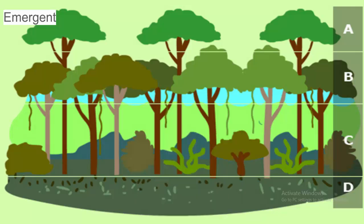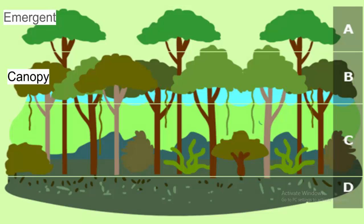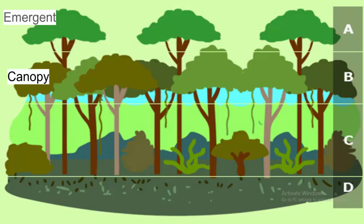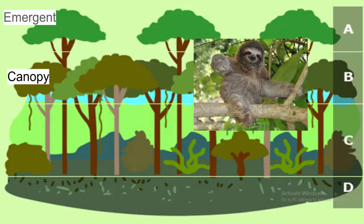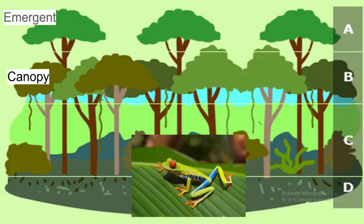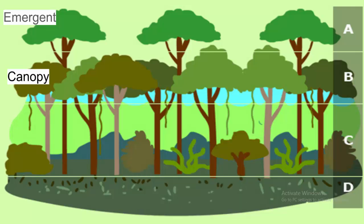The canopy layer is home to the most variety of animals, like monkeys, sloths, and frogs, with trees that are 60 to 130 feet tall.